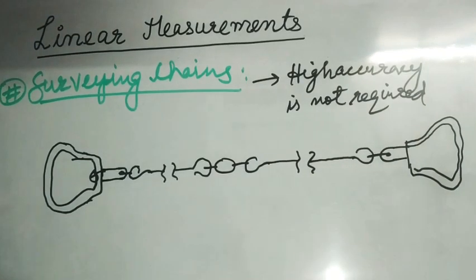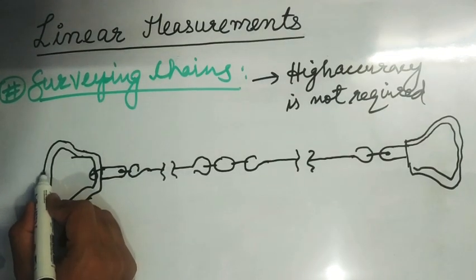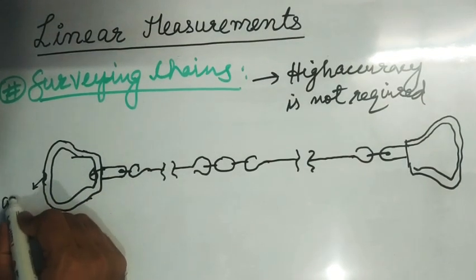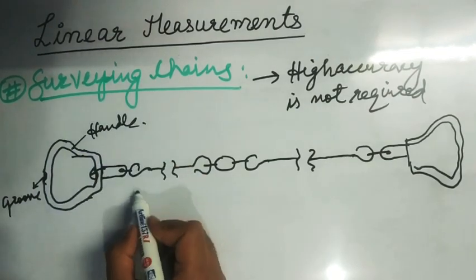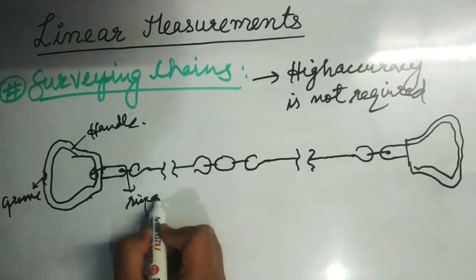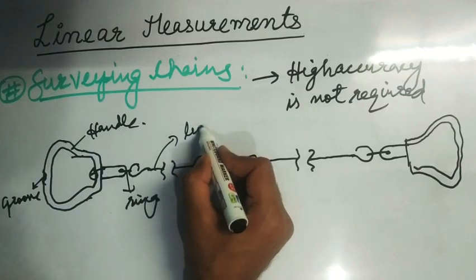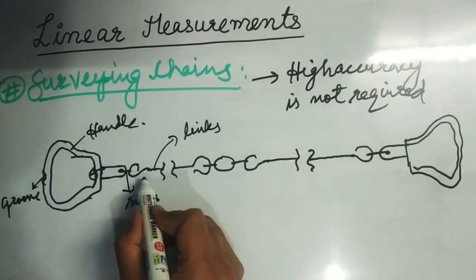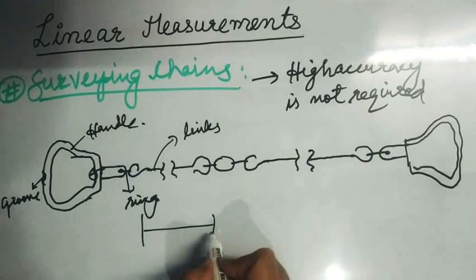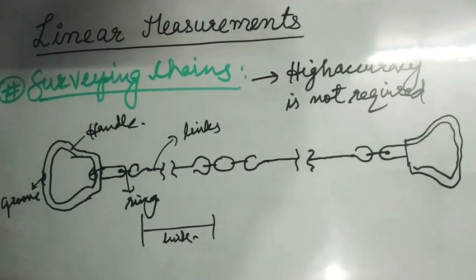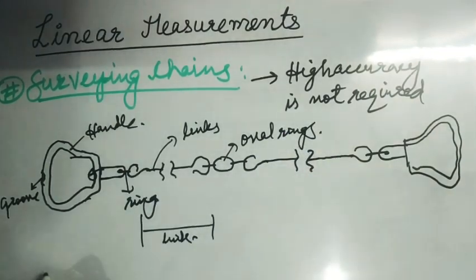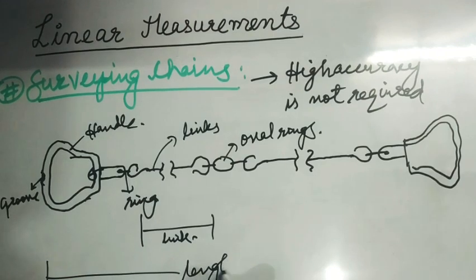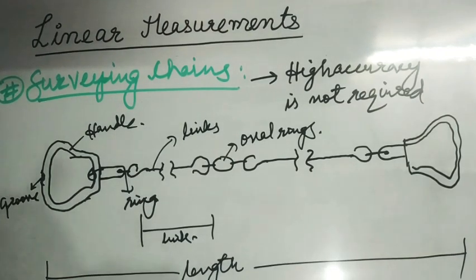This is a diagram of a surveying chain. This part is called a groove, here is the groove. This is the handle, this is the ring, and these parts are called links. This portion is a link. These are oval rings, and this is the whole length of the survey chain.